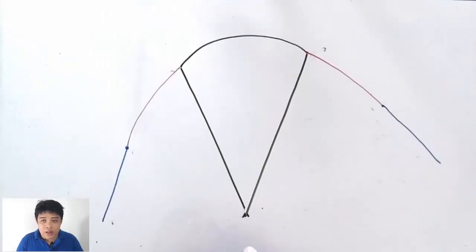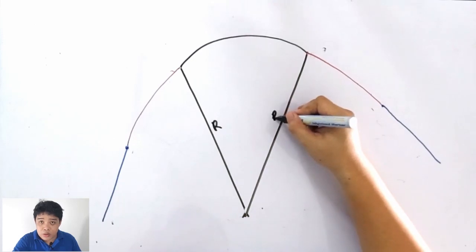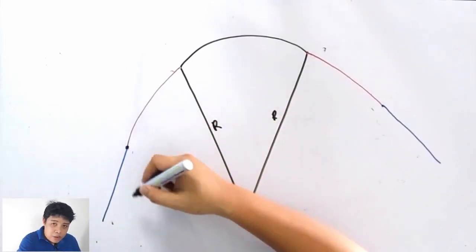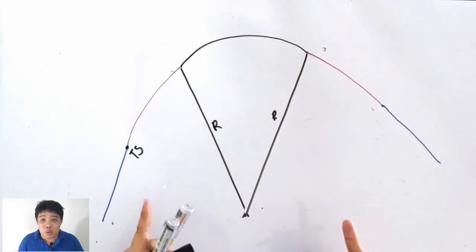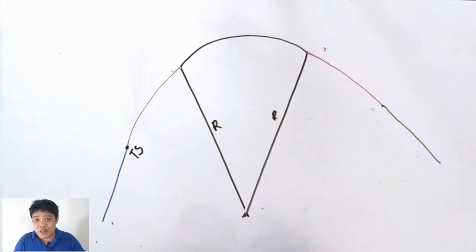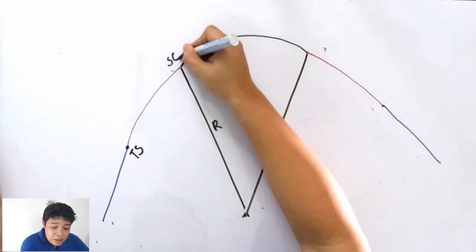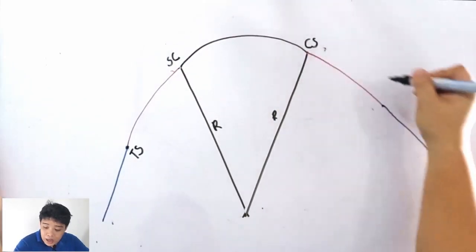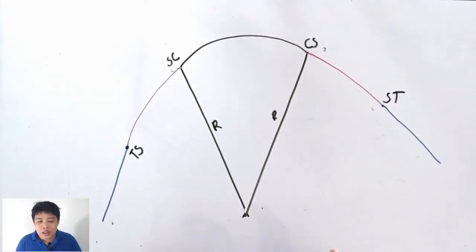To avoid sudden increase of centrifugal force, the engineer provides a beautiful transition curve. Now let us name some important points. This is the simple curve with radius R. This point is tangent to spiral (TS). The red line is the transition or spiral curve. Then this point is spiral to curve (SC), curve to spiral (CS), and spiral to tangent (ST).